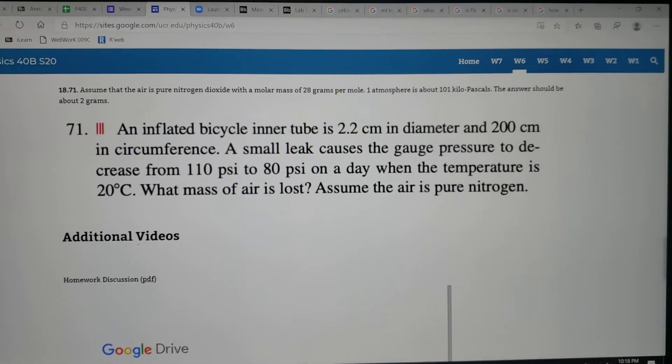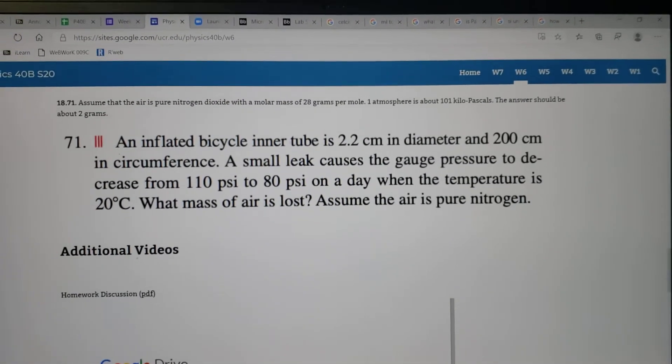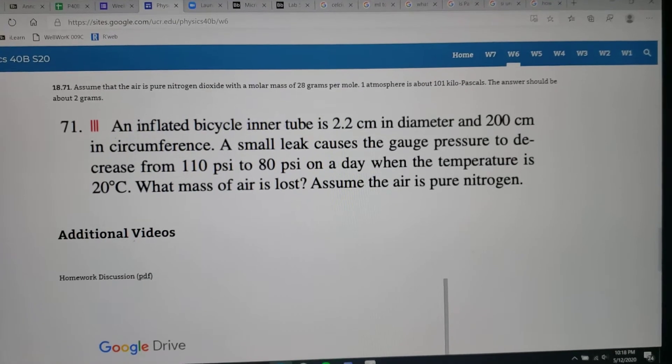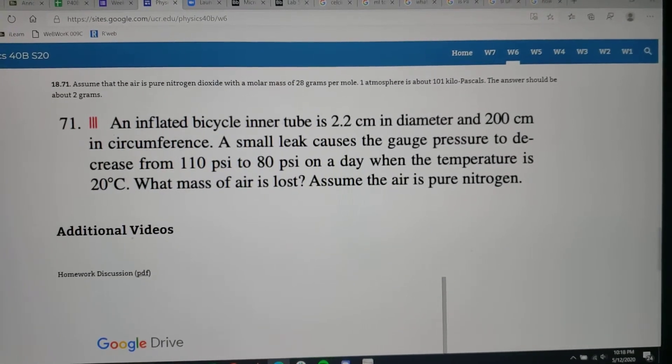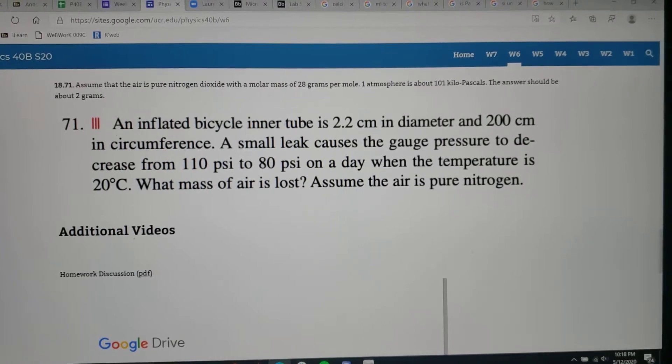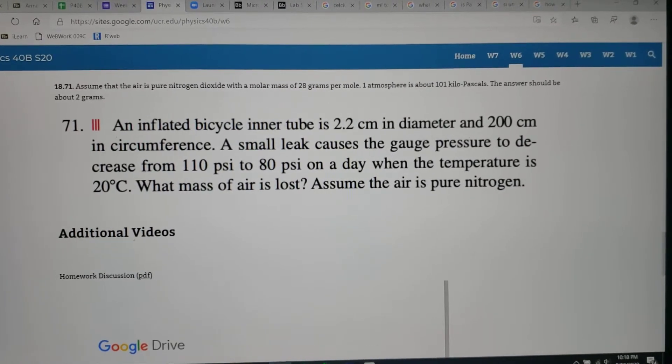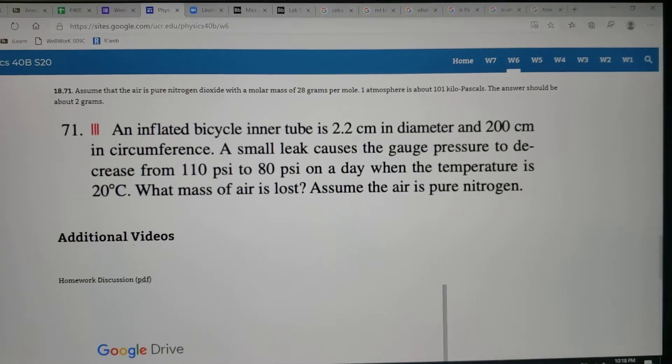Alright guys, this is 18.71 for week 6. The problem says, an inflated bicycle inner tube is 2.2 centimeters in diameter and 200 centimeters in circumference. A small leak causes the gauge pressure to decrease from 110 psi to 80 psi on a day when the temperature is 20 degrees Celsius. What is the mass of air lost? Assume the air is pure nitrogen.